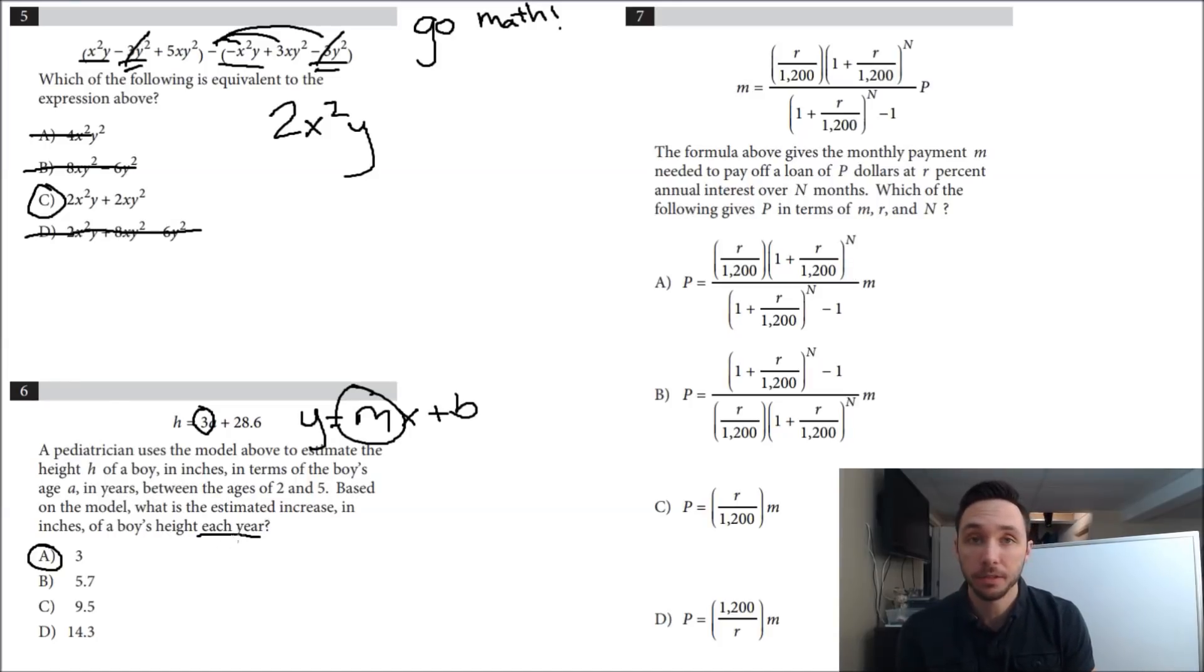If we look at that advice in number six, I told you to just read the last question or last sentence first. Let's do the same thing here. Which of the following gives P in terms of m, r, and N? So what is this really asking you to do?